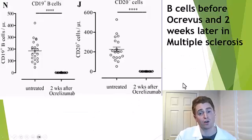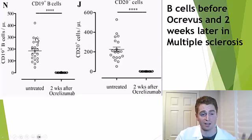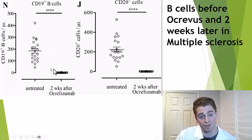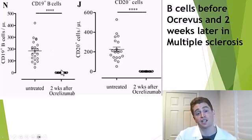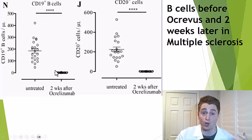This is a study on ocrevus and multiple sclerosis. You can see the baseline levels on the left side of the charts of the CD19 and CD20 cells, both the B cells prior to ocrevus and afterwards. And you can see the levels are zero. So it's not normal to have a normal level of B lymphocytes after getting these drugs.